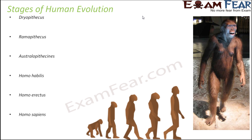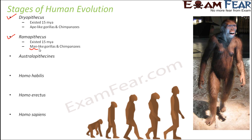Dryopithecus and Ramapithecus both existed around 15 million years ago. Dryopithecus was more similar to apes like gorillas and chimpanzees, whereas Ramapithecus looked more similar to how we see human beings today — less hairy and a little more erect. Gorillas do not walk as erect as human beings; ape-like forms were more hairy and walked on four legs.